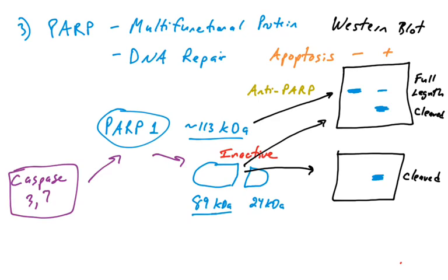DNA fragmentation, executioner caspases are responsible for beginning that process, and executioner caspases are going to allow us to detect whether or not apoptosis is occurring by looking at some of their substrates, whether or not they are cleaved. The PARP protein is a classic example of an executioner caspase substrate that is cleaved and can be easily detected on a Western blot.